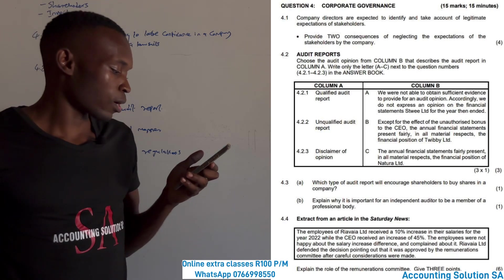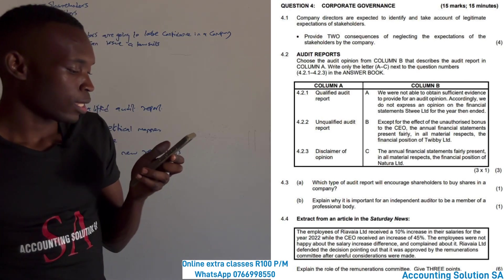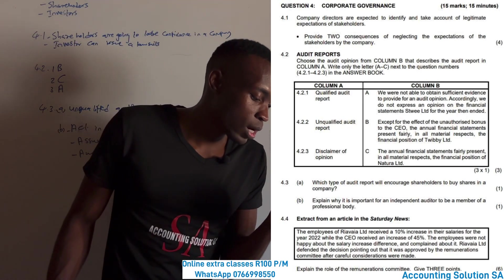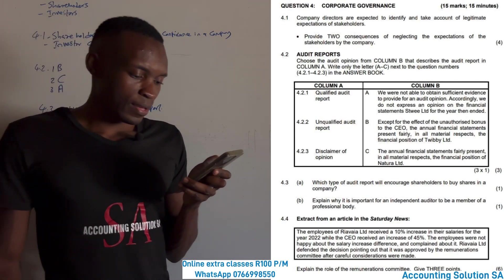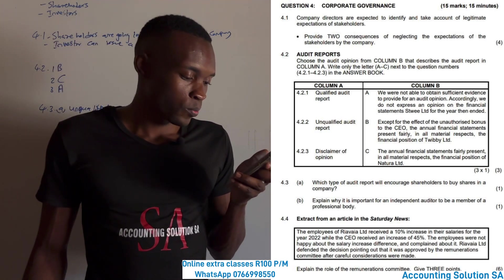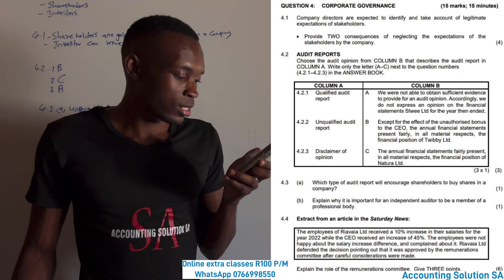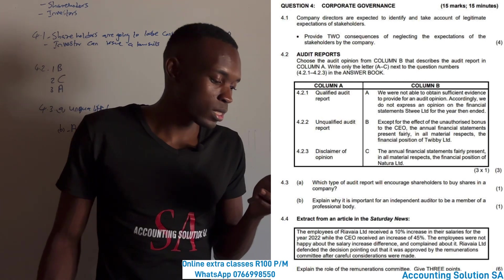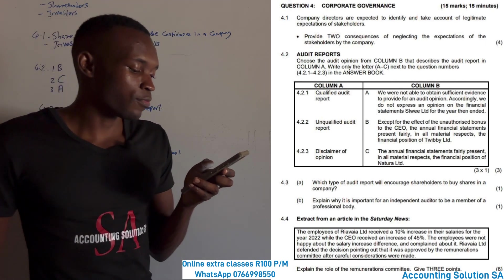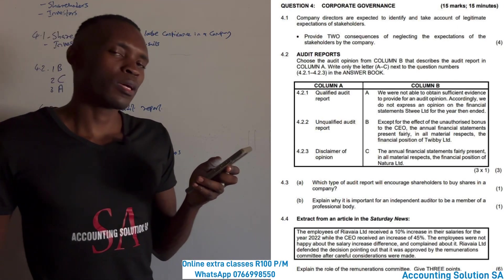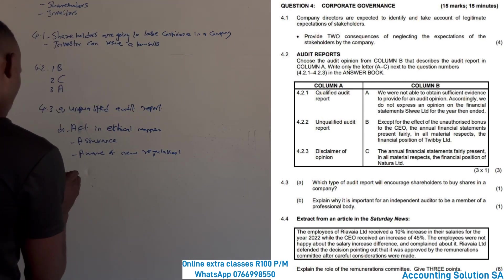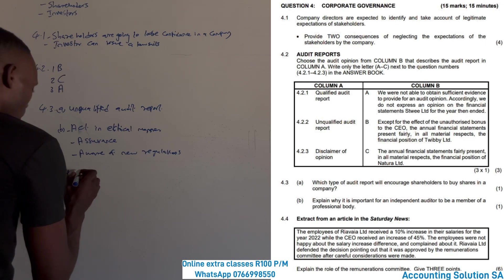Moving to the next question: an extract from an article in the Saturday News. Employees of Revivor Ltd received a 10% increase in their salary for 2022, while the CEO received an increase of 45%. The employees were not happy. Revivor Ltd defended the decision, pointing out that it was approved by the remuneration committee after careful consideration. Explain the role of the remuneration committee and give three points why we should have one.